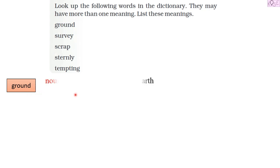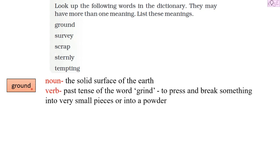As a noun, 'ground' means the solid surface of the earth — 'The trees grow on the ground.' Ground is a verb as well — it is the past tense of the word 'grind,' which means to press and break something into very small pieces or into powder. For example, 'He ground the turmeric into turmeric powder.'